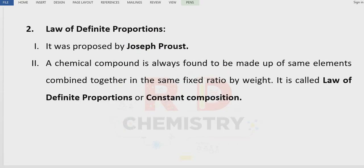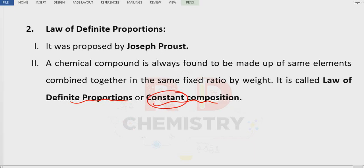The second law is the Law of Definite Proportion. Definite proportion and constant composition are one and the same — different names for the same law. This law was proposed by Joseph Proust. Let me take the example of carbon dioxide. Carbon dioxide can be prepared from carbon and oxygen by more than one method.